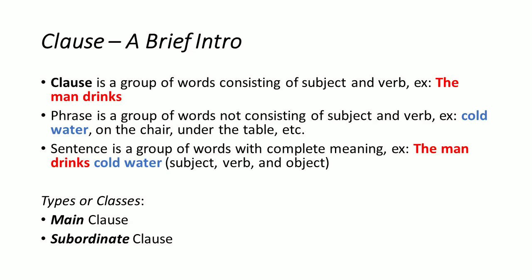A phrase is a group of words not consisting of a subject and a verb. For example, 'cold water' — there is no subject, there is no verb; 'on the chair' — no subject, no verb; 'under the table' — no subject, no verb.